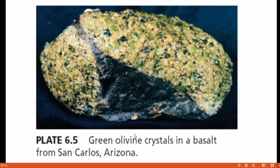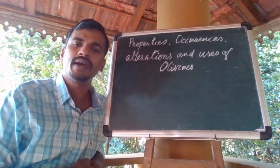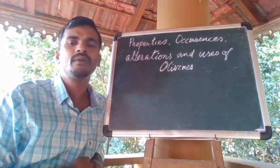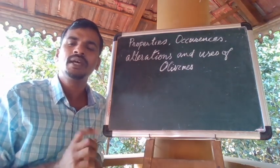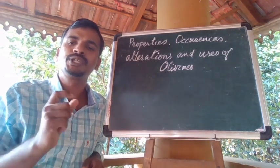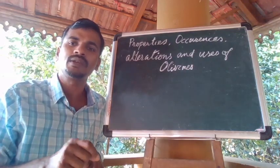Here you can see a green olivine crystal in basalts from San Carlos, Arizona. This is another olivine rock showing the typical olive green color. So we have discussed the general characteristics of the olivine group of minerals. Now let us move to the specific characteristics of each mineral, discussing some individual characteristics of certain minerals.